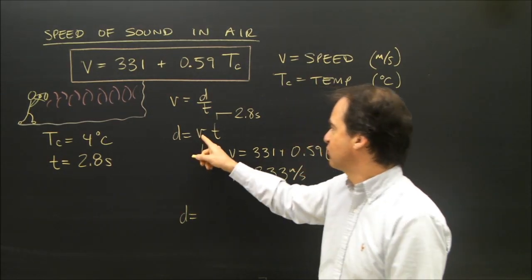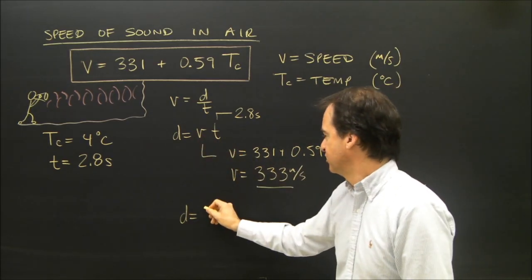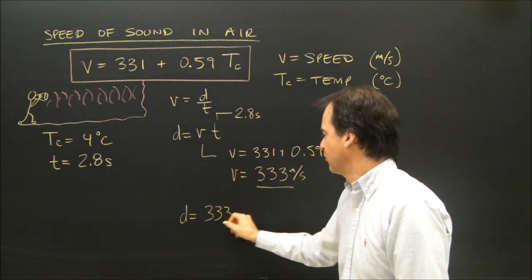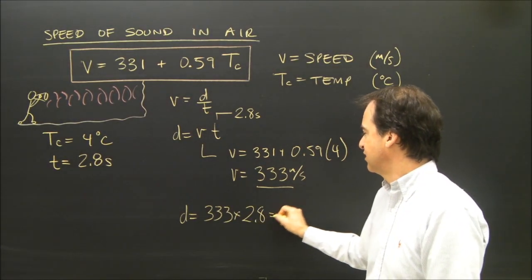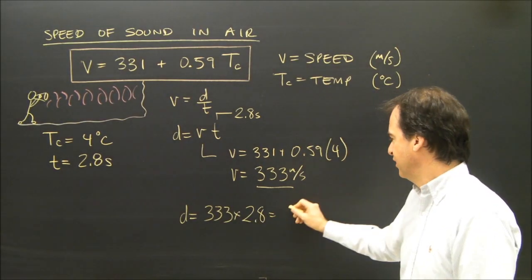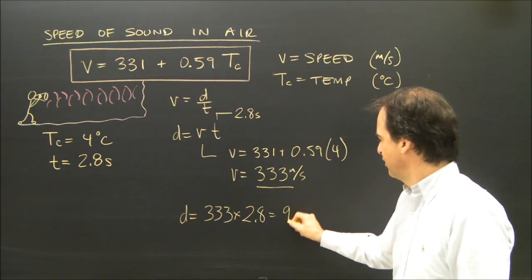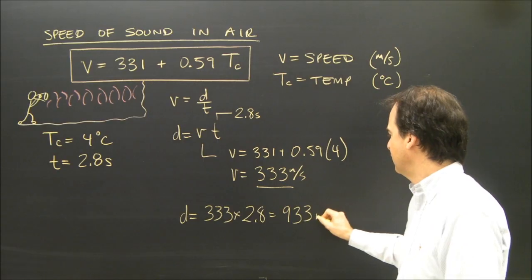I can see the distance the wave travels was its velocity, how fast? 333 times how long were they travelling for? 2.8 seconds. So the total is 933 metres.